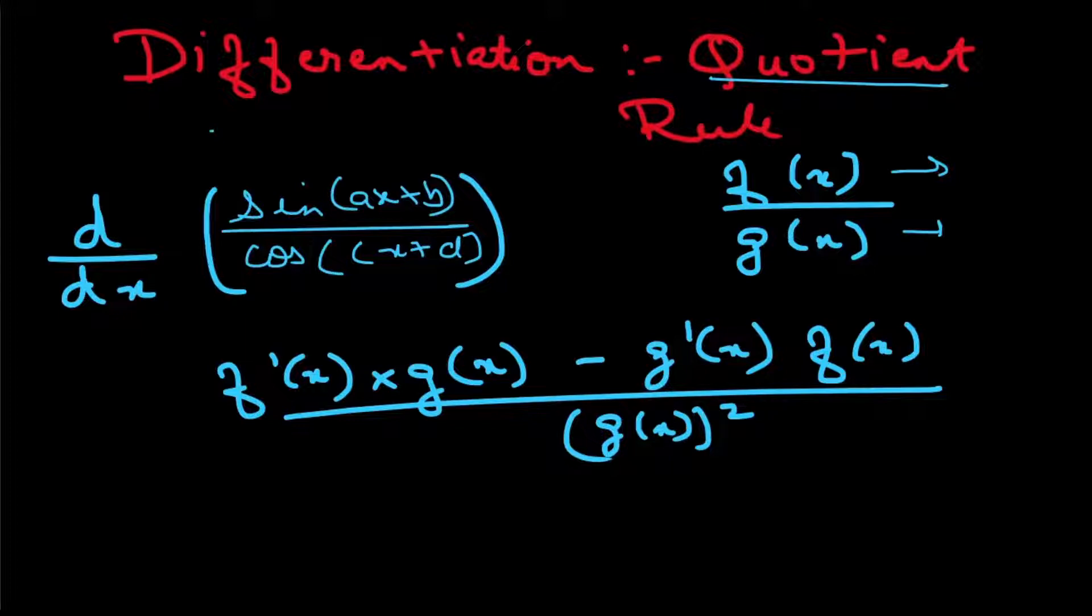So let's apply that in this question: sine(ax + b) divided by cos(cx + d). First thing is differentiation of sine(ax + b). So differentiation of sine function is going to be cos(ax + b), but ax + b is not the same as x, so we have to apply the chain rule.